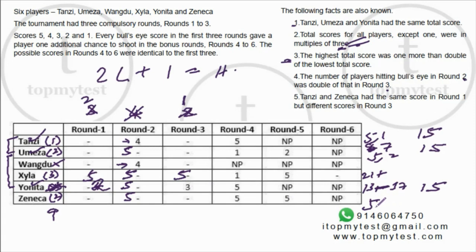Zeneca has two bullseyes and must score less than or equal to 4 in the last bonus round, so his total is at most 24. With two bullseyes, his minimum is 20-plus, giving a range of 20 to 24.